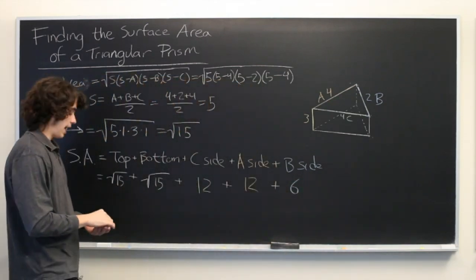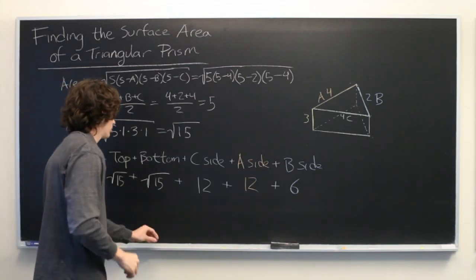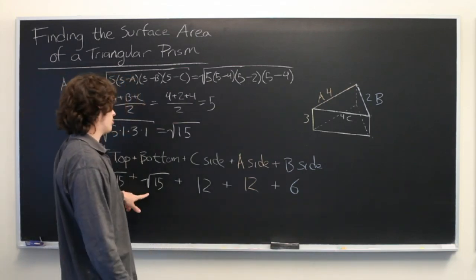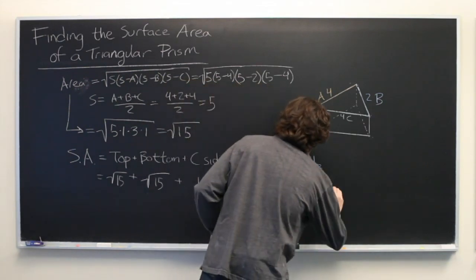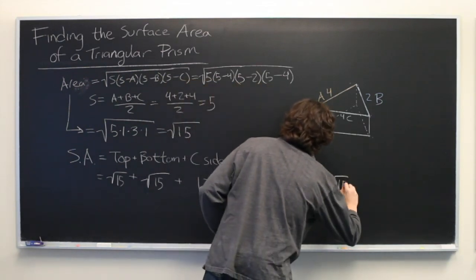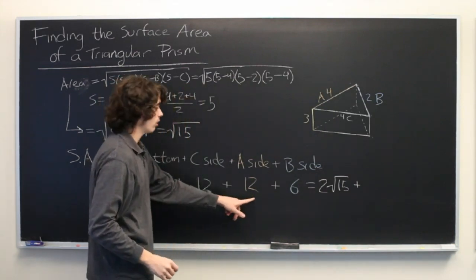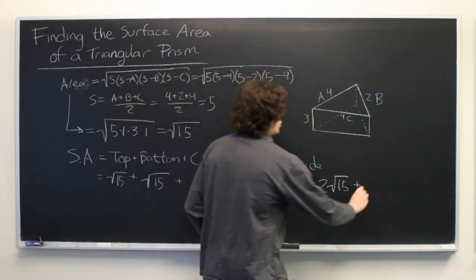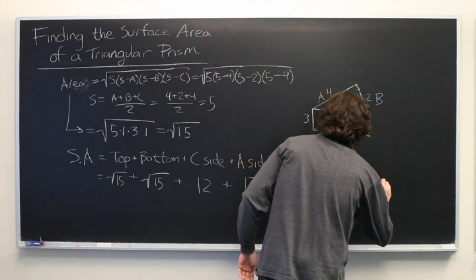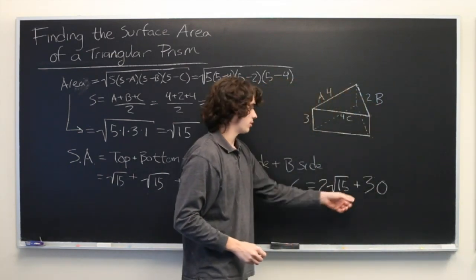Cool. So now we just need to add all this up to get our final answer. Square root of 15 plus square root of 15 equals 2 square root of 15. 12 plus 12 is 24, plus 6 is 30. And there's a final answer: 2 square root of 15 plus 30.